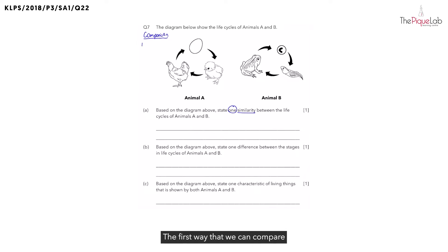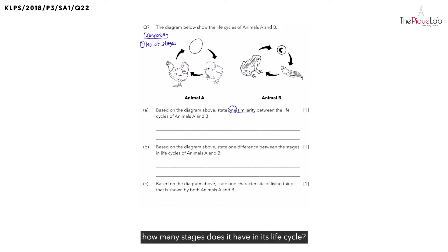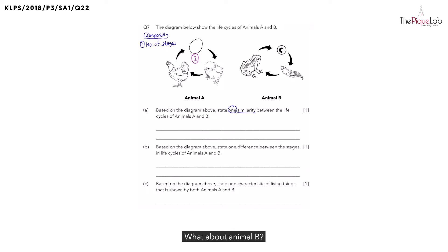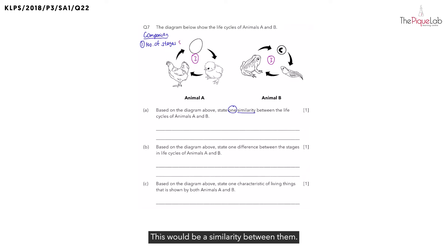The first way that we can compare is the number of stages. If we look at animal A, how many stages does it have in its life cycle? Animal A has three stages. What about animal B? Animal B also has three stages. So is this a similarity or a difference? This will be a similarity between them.